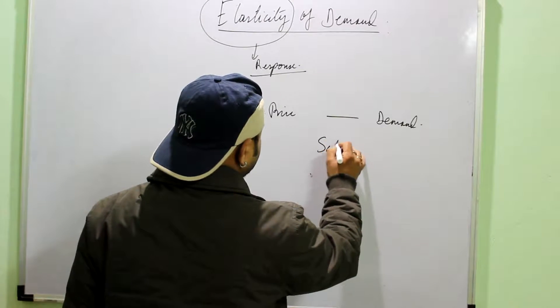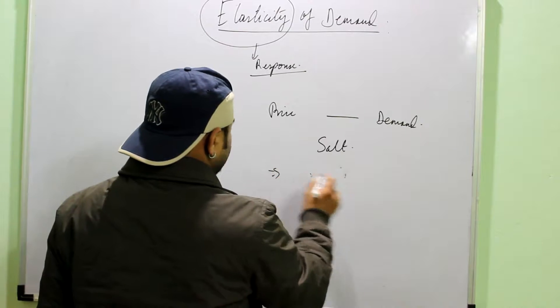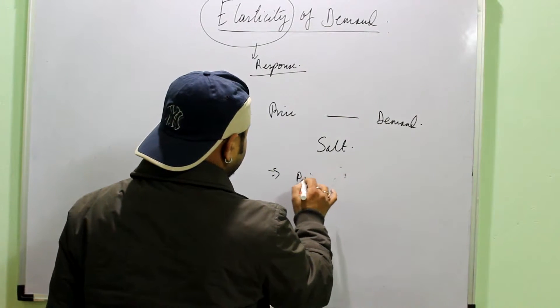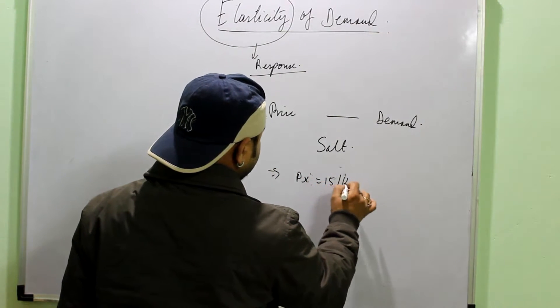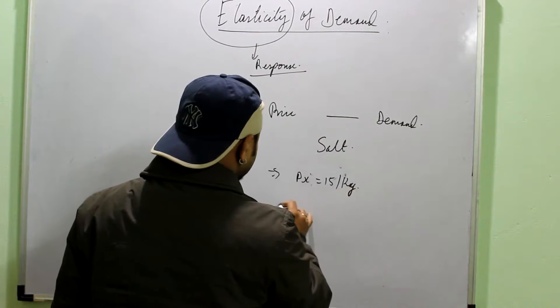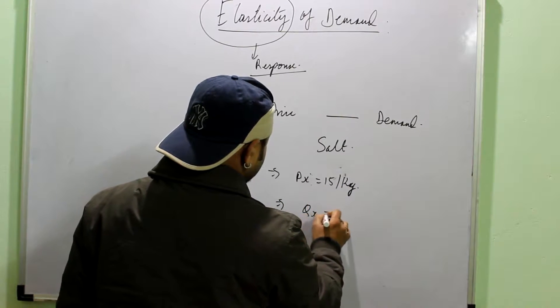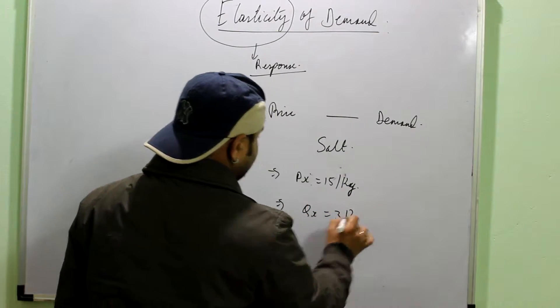For example, if I take salt. Say, price of salt in the present scenario is say 15 per kg. And in a month, the family needs 3 kg salt. But now the price of salt comes to say 18 per kg.